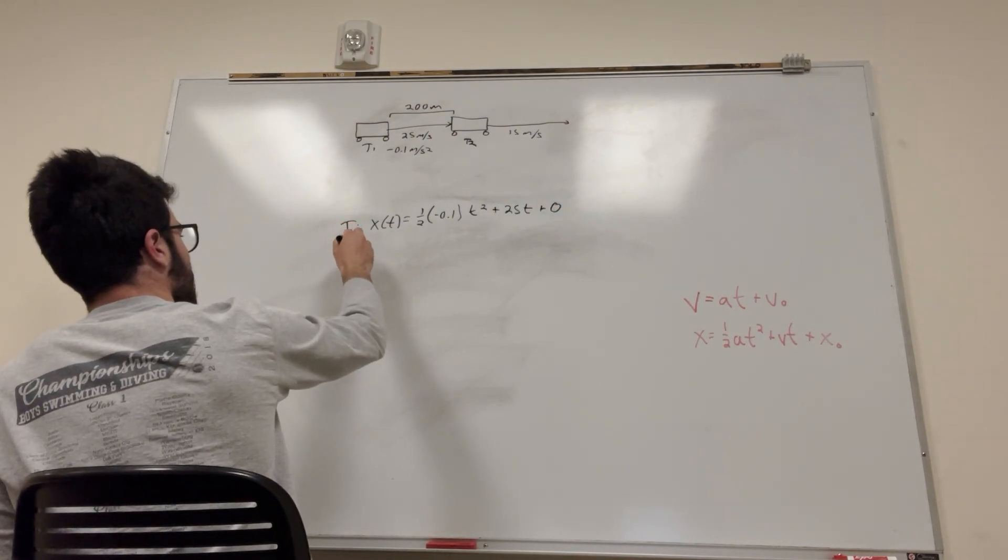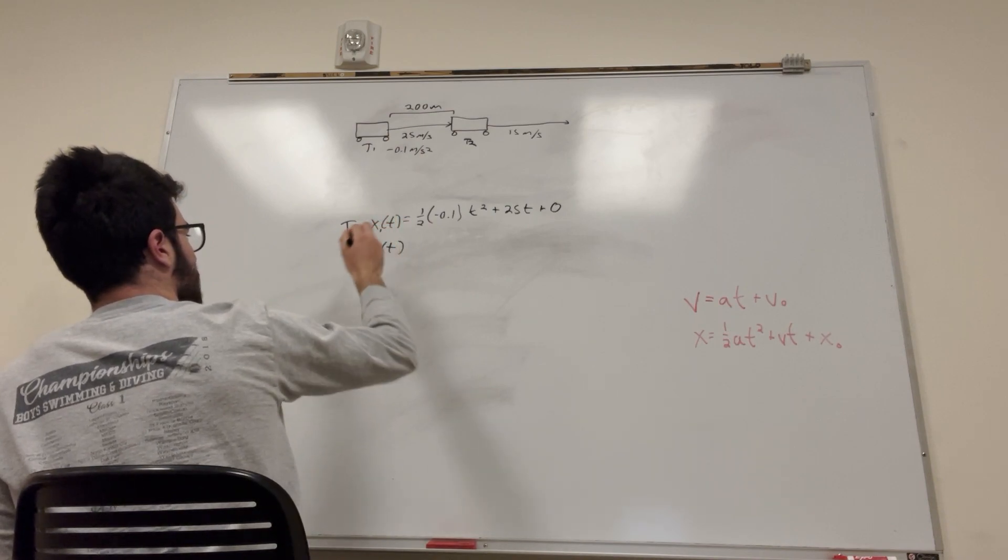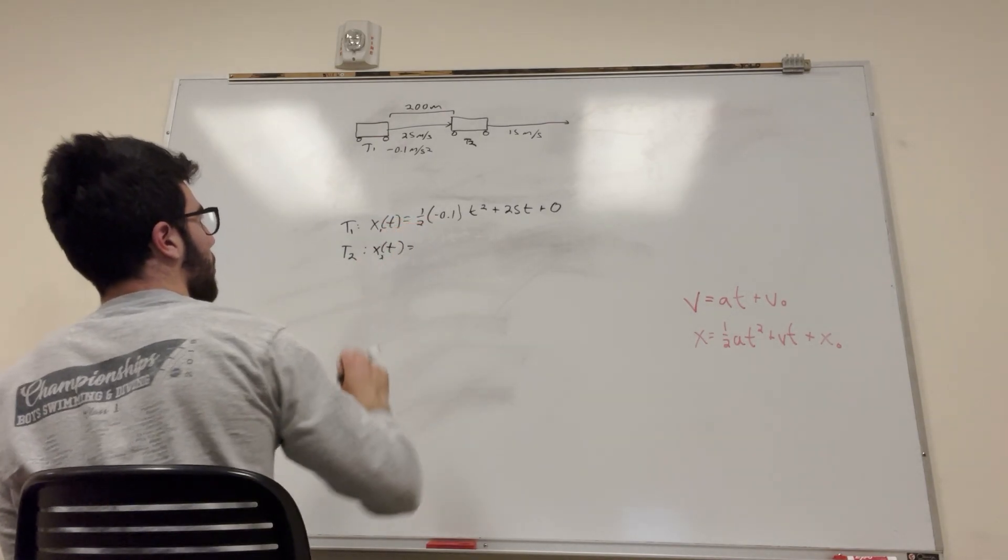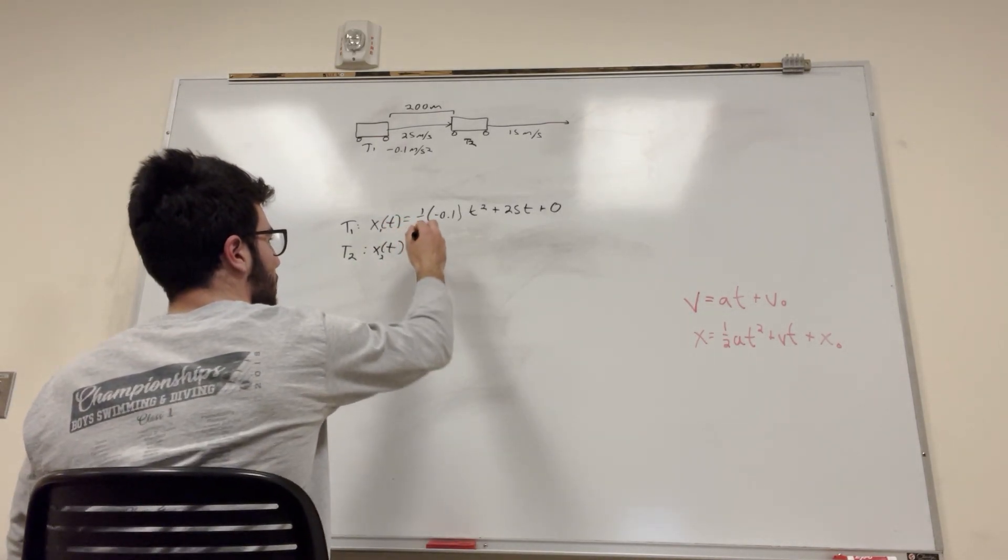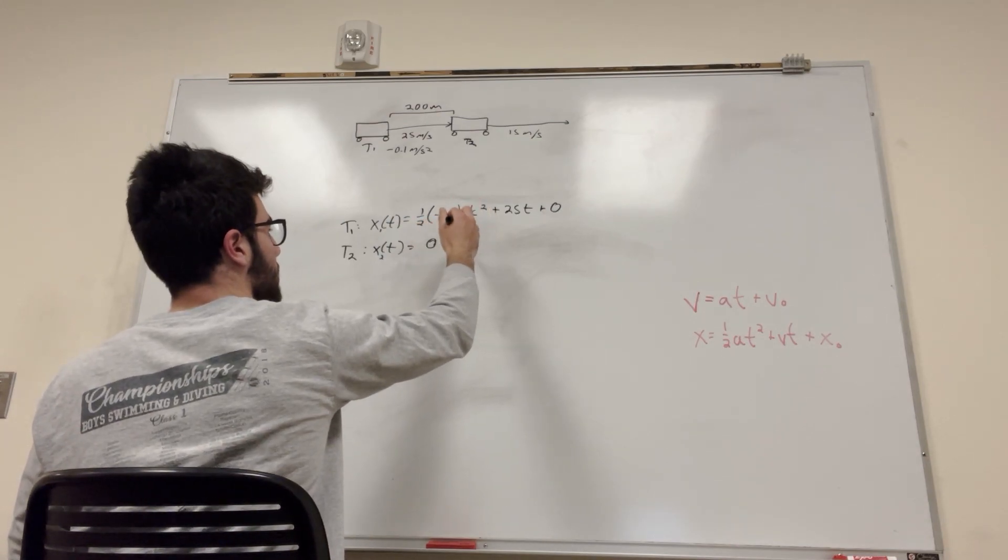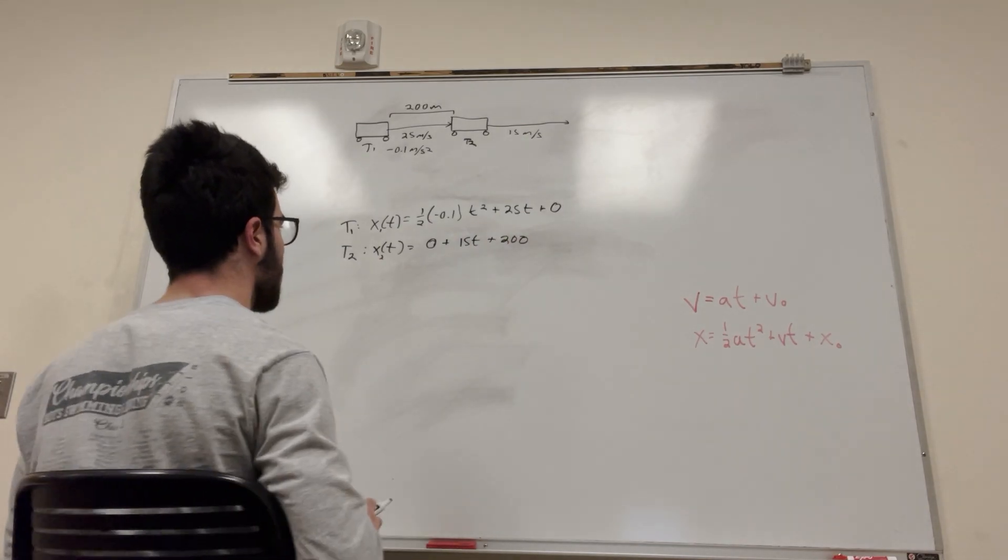And we have t2. So, it's acceleration. No acceleration. You don't have to worry about that. So 0. Plus v of t, so it's 15 times t. And then its initial starting point is 200. Alright, perfect.